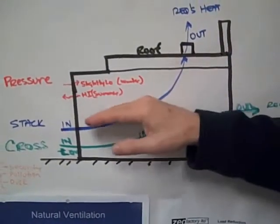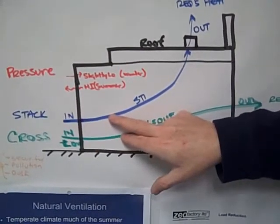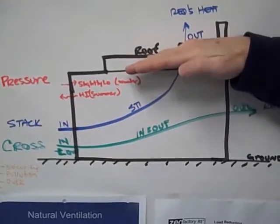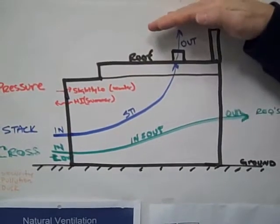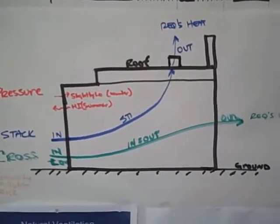The second type is the stack ventilation where you have the inlet low in the front, but then it exits high and it depends on the heat to actually, hot air rises and it goes out the top of the building. And there in the roof, you need some openings to allow it to exit.